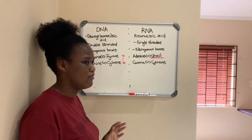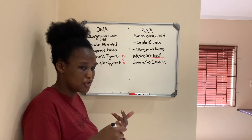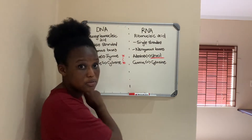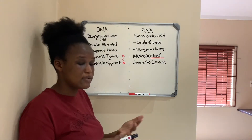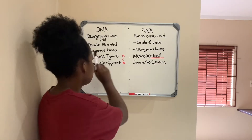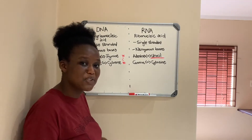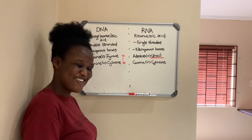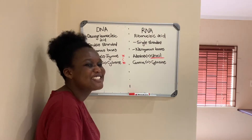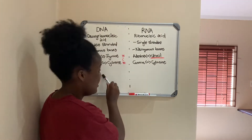I'm skipping a lot of the structural details — like the fact that DNA has a sugar (deoxyribose), a phosphate group, and nitrogenous bases — because I know you guys are smart and already know it. So that's DNA.